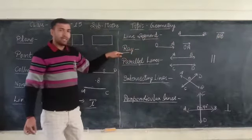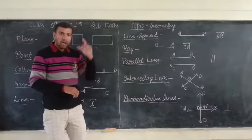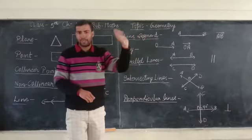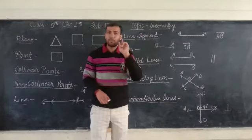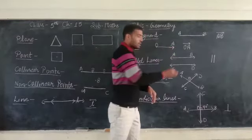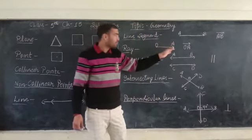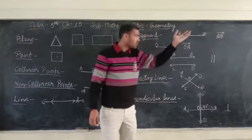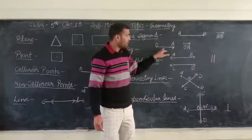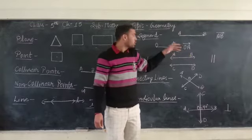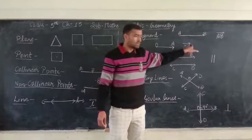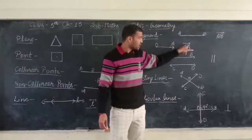Next: Ray. What is a ray? A ray has one fixed endpoint and another edge that is not fixed — it can be extended. So we can write OA as a ray, because one point O is fixed and the other point A is not fixed. The symbol for a ray is OA with an arrow on top pointing in one direction.